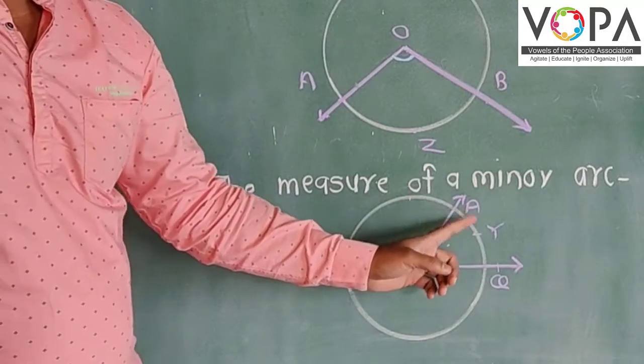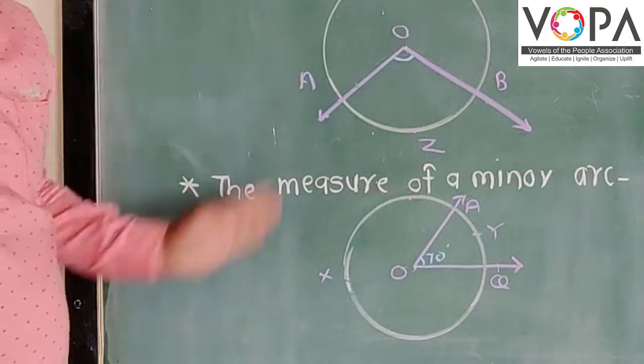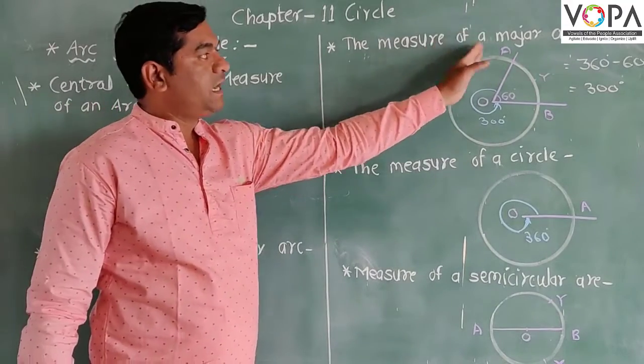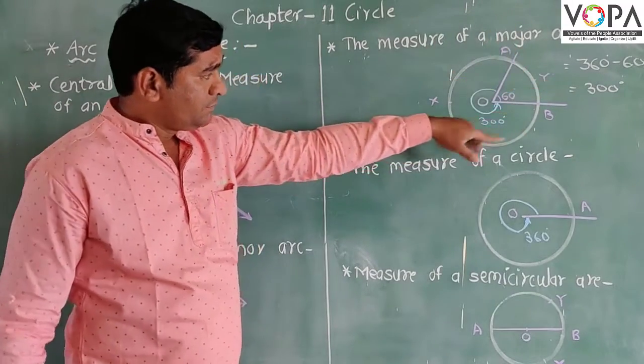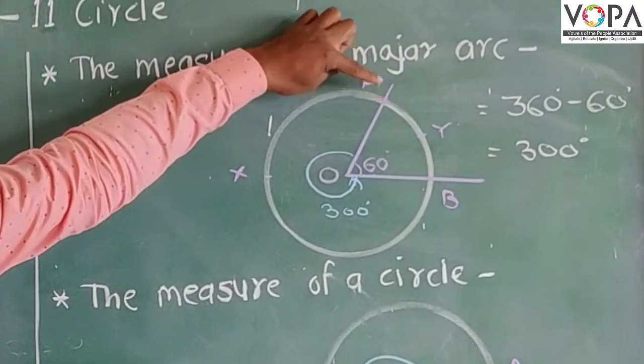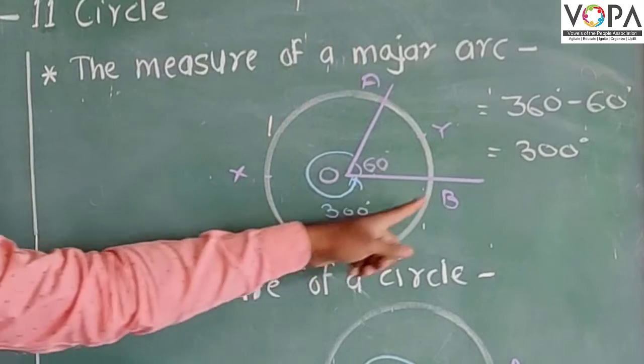So the name of the minor is AYB. And here, major arc. The major arc, same here. The major arc defined, the name of the major is AASB.